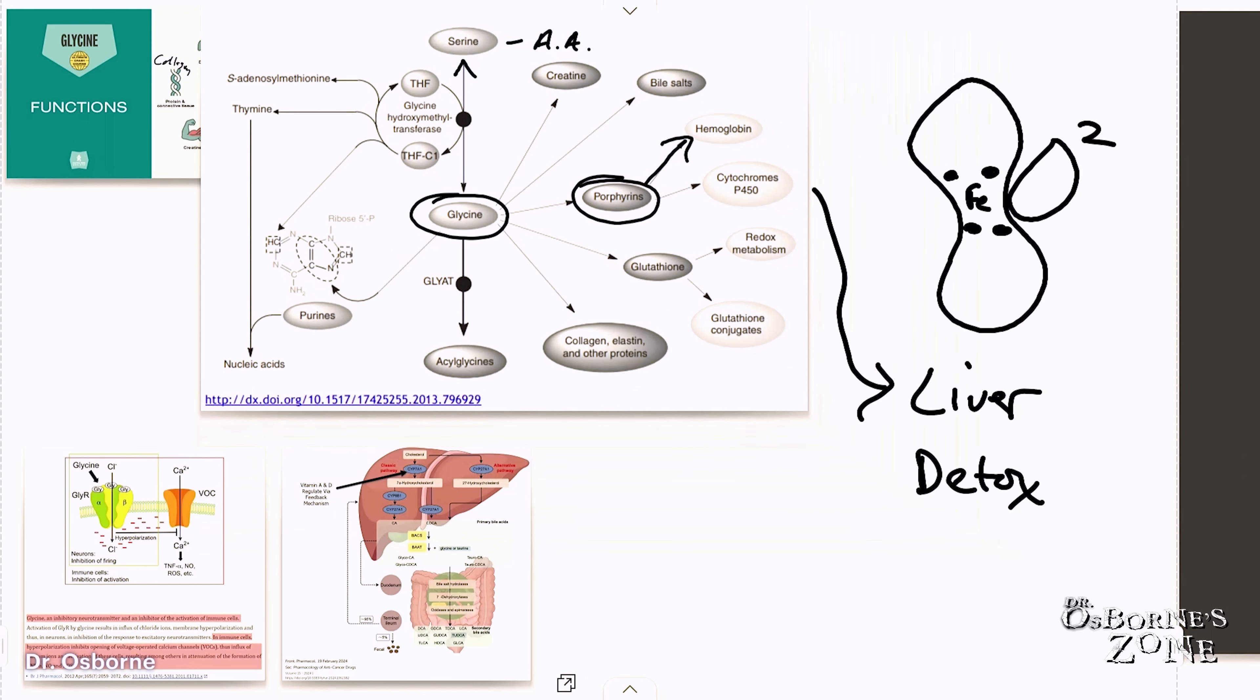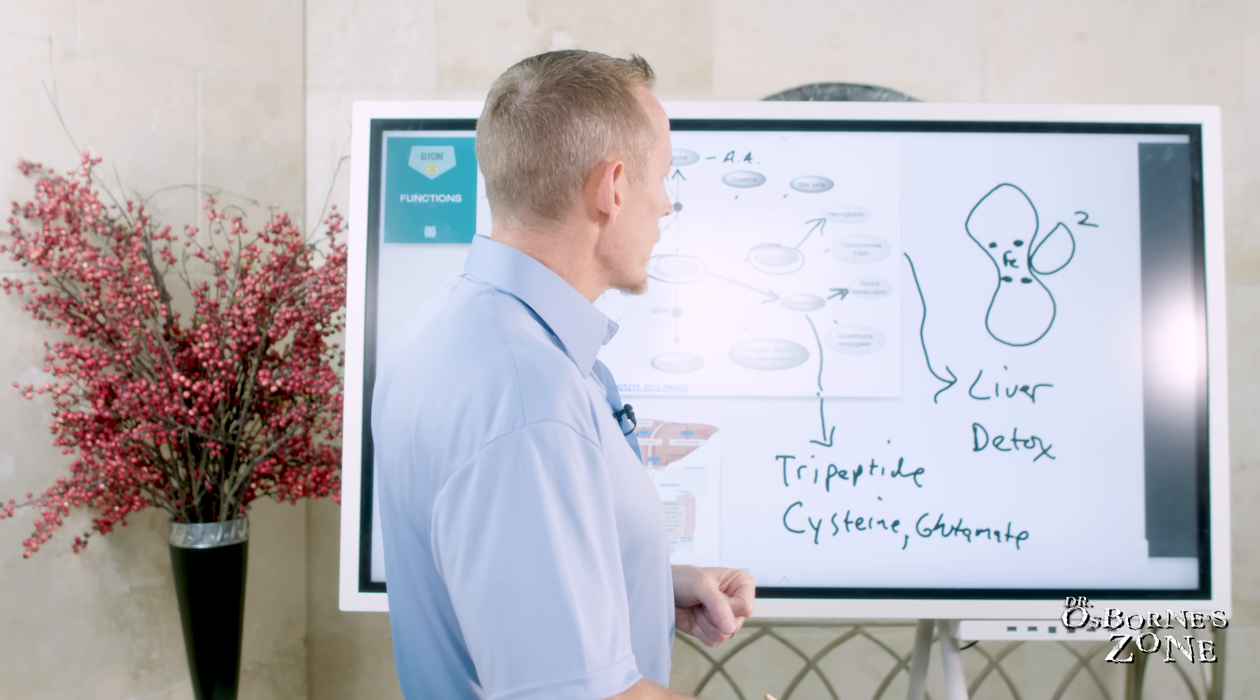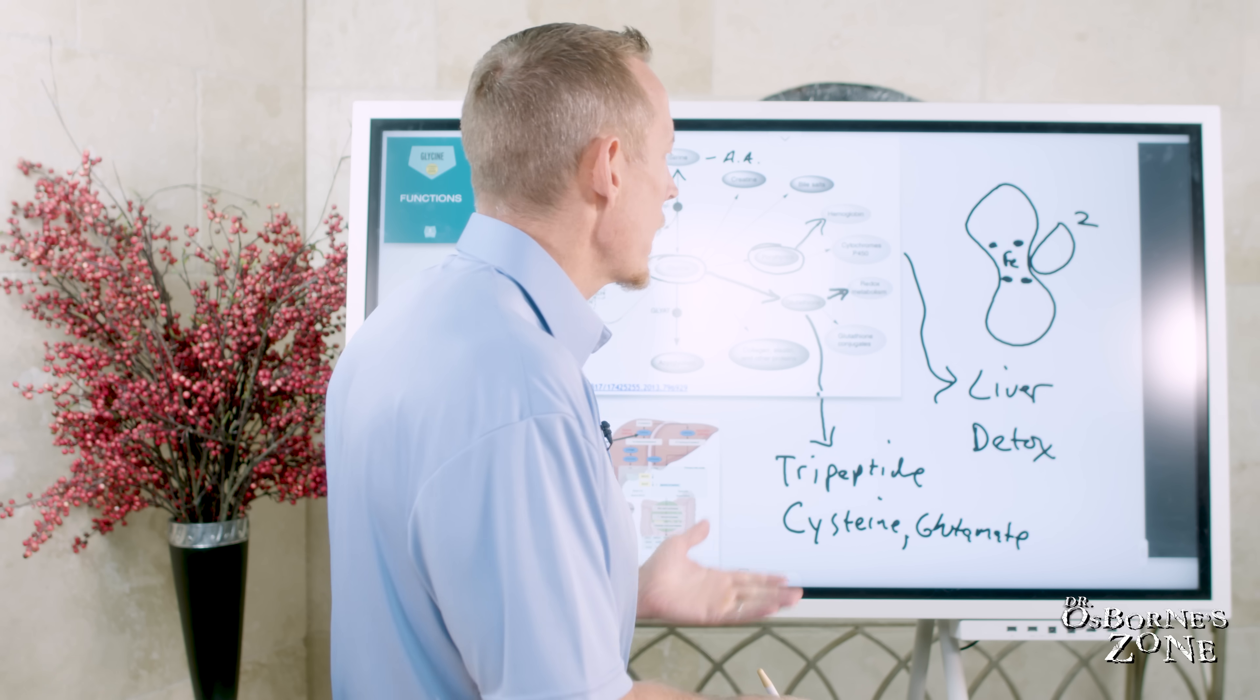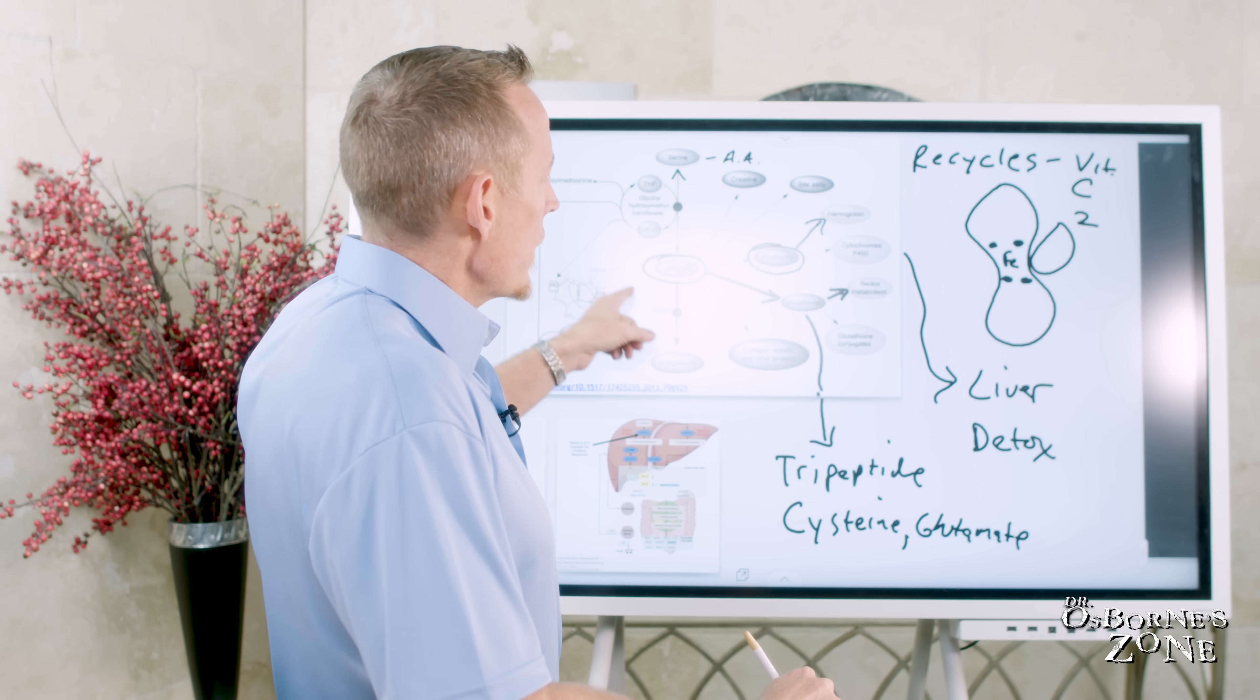Now, glycine also is responsible in part for the making of glutathione. Glutathione is what's sometimes referred to as a tripeptide. It's made of three amino acids: glycine, of course, but we also need cysteine and glutamate, which comes from glutamine. So the combination of these three amino acids is what builds glutathione. Of course, glutathione's main function, or one of its main functions, is it helps the liver to detoxify. Glutathione conjugates, it helps break down toxic compounds through the liver. It also helps as a strong antioxidant. One of glutathione's other functions is it can help recycle other antioxidants, primarily vitamin C. So as your body uses and burns through vitamin C, glutathione helps to basically recycle it and reuse it again. And we can't make glutathione without glycine.